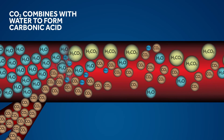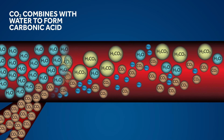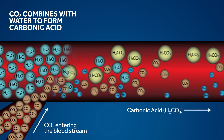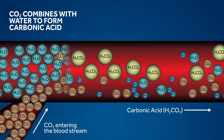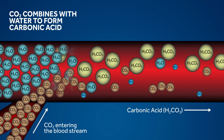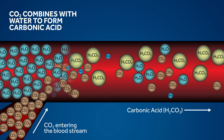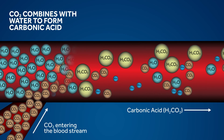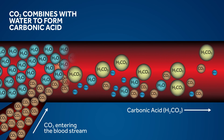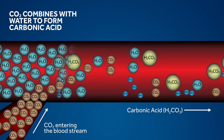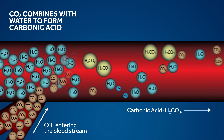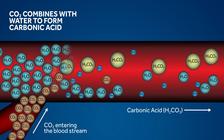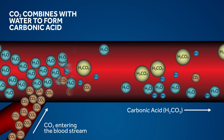Cellular waste in the form of CO2 is transported out of the cell and into the bloodstream, where it combines with water to form carbonic acid in the blood. The higher the concentration of CO2 in the blood, the more acidic the blood will be; the lower the concentration, the more alkaline. Approximately 75% of carbon dioxide is transported in the red blood cells, and 25% is transported in the plasma as carbonic acid.